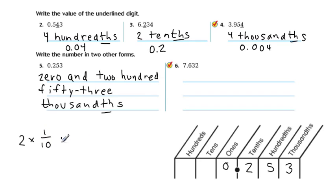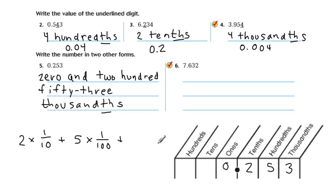And then we're going to add that to the next thing, which is 5 of these, which are hundredths. So it's 5 times 1 over 100. And then the last one is 3 times 1 over 1,000.